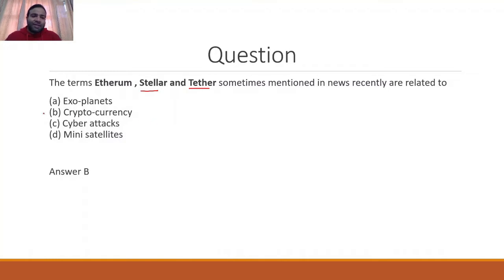Cryptocurrency — Bitcoin is a cryptocurrency, and similarly Ethereum, Stellar, and Tether are also cryptocurrencies.